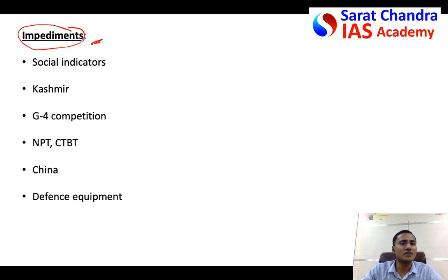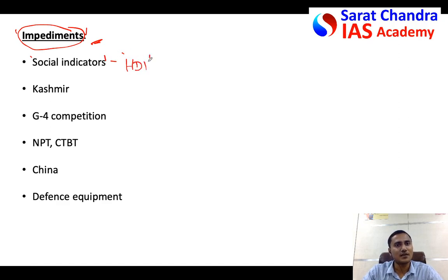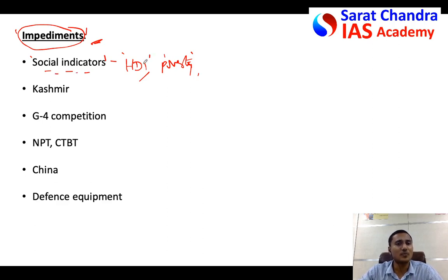Now for the actual impediments — use the same term 'impediments' from the question in your answer headings. One obstacle is that India performs poorly on social indicators: the Human Development Index shows high poverty and violence, and gender equality is low, with a very poor child sex ratio and high malnutrition. Some countries argue that a nation unable to eliminate poverty should not become a permanent member. In fact, some of India's social indicators are even worse than those of Sub-Saharan African countries.